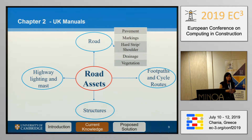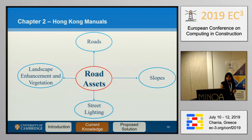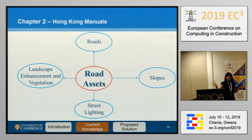The UK manuals also include lights and light poles, structures like bridges or tunnels, and footpaths and cycle routes as separate categories. The Hong Kong manuals have similar categories to the UK — roads and street lighting — but the difference is they don't have a structures category; instead they have slopes, and they put much more emphasis on landscape and environment.